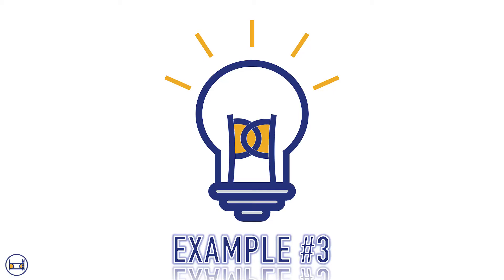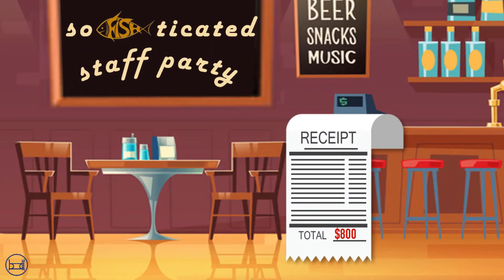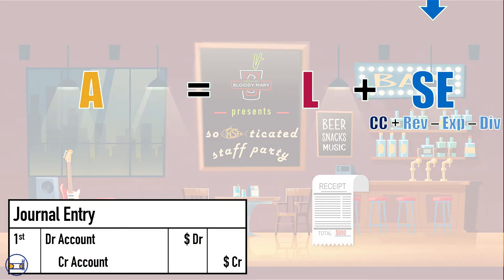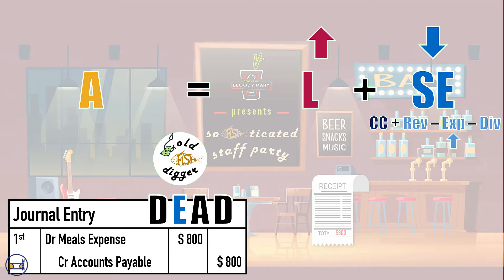The third scenario involves expenses that are recorded before we pay for them, such as when we receive a good or service and are later sent a bill. Let's say one night we rack up a company bar tab of $800 at the company's annual sophisticated staff party. We would debit our meals and entertainment expense for $800 and credit a liability account called accounts payable for $800 right away.